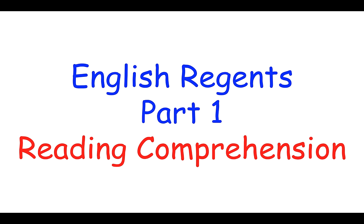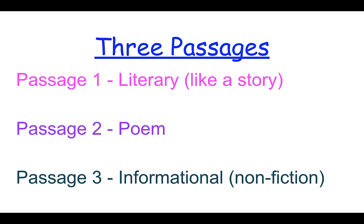English Regents Part 1 is always a reading comprehension section, and there are always three passages. The first passage is always a literary passage — typically an excerpt from a short story or a memoir — with multiple choice questions. Passage 2 is always a poem, sometimes long, sometimes short, also with its own multiple choice questions. Passage 3 is always an informational text, oftentimes a science-type text, though not always, and of course there are questions to go with that.